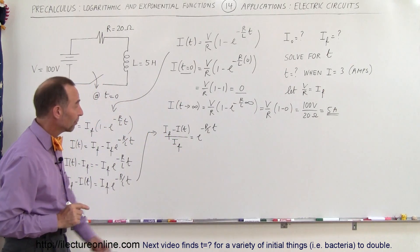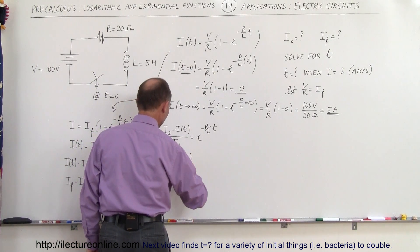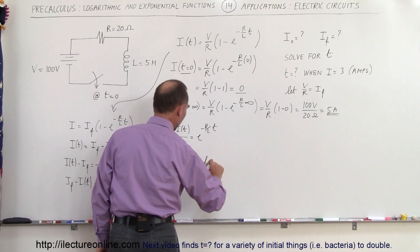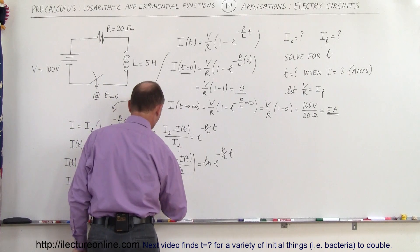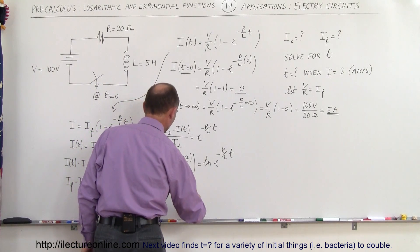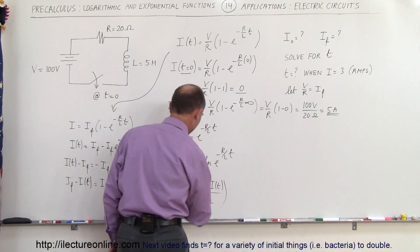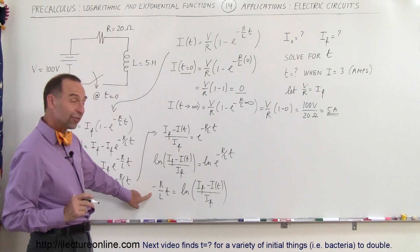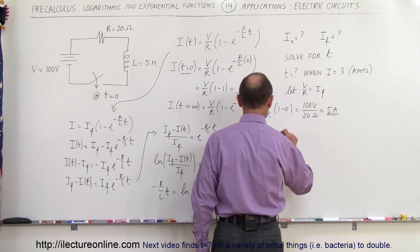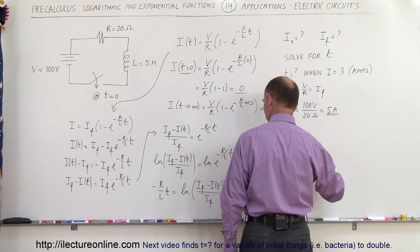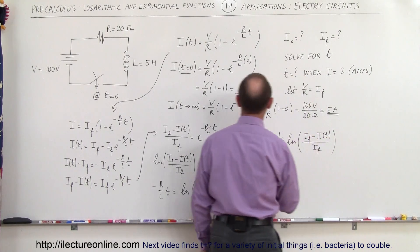Taking the natural log of both sides, the natural log of (I final minus I(t)) divided by I final equals the natural log of E to the minus R over L times T, which simplifies the right side to minus R over L times T. Rearranging: minus R over L times T equals the natural log of (I final minus I(t)) divided by I final. Multiplying both sides by negative L over R, we isolate time: T equals negative L over R times the natural log of (I final minus I(t)) divided by I final.